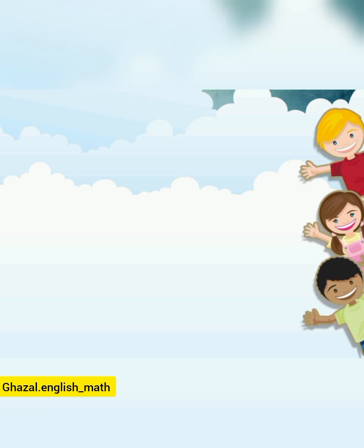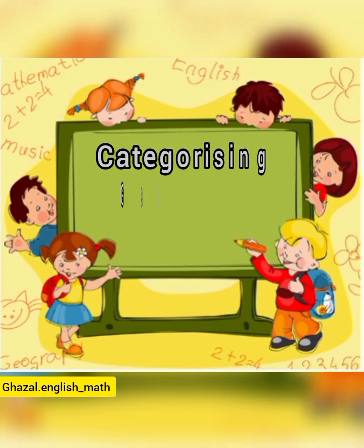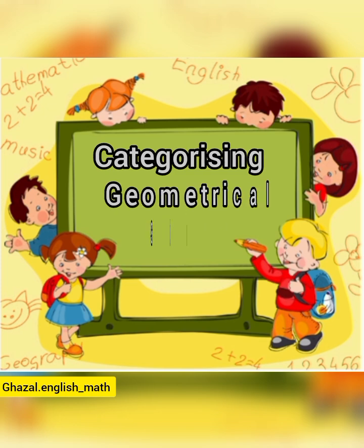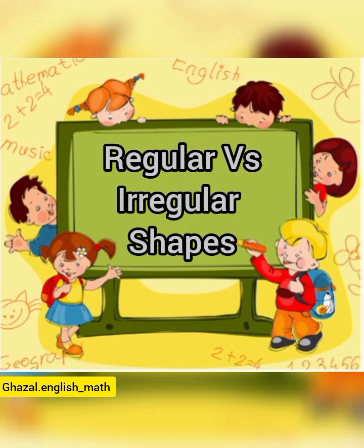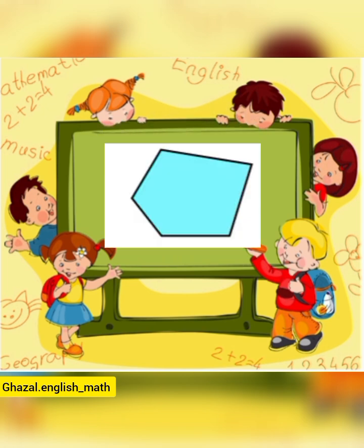The teacher came to the class and asked the students how can we categorize the geometrical shapes. She answered that one way is by using the definitions of regular and irregular shapes, and she continued her teaching by giving two different examples.